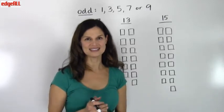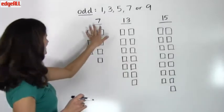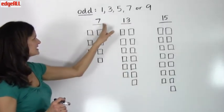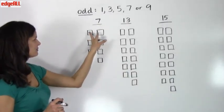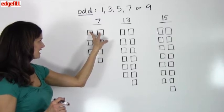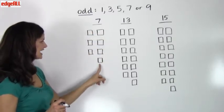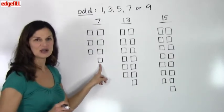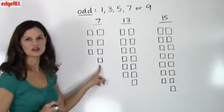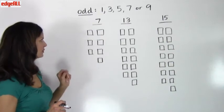So for example, the odd number 7, we pair them up in 2s. We've got 1 set, 2 sets, 3 sets, and to get our 7th object, we have 1 left over, 1 that's not part of a pair.